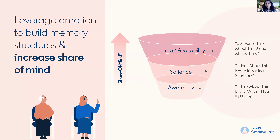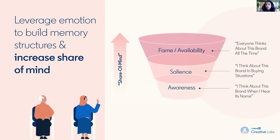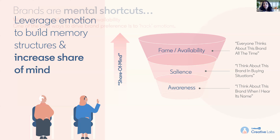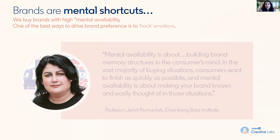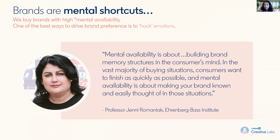Key attributes to build into creative include a storytelling arc — you can use characters or mascots to build anticipation. Think about the context: is it trend inspired, socially optimized, topical? Other examples include data inspiration — clever use of data insights in the creative. Is it localized? Is it authentic? Think about all of those things to increase your share of mind. The reason is that people buy brands with high mental availability, so we're building that share of voice throughout.